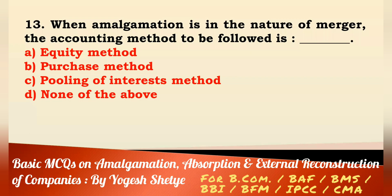Question 13: When amalgamation is in the nature of merger, the accounting method to be followed is — equity method, purchase method, pooling of interest method, or none of the above? Answer: When amalgamation is in the nature of merger, the accounting method to be followed is the pooling of interest method.